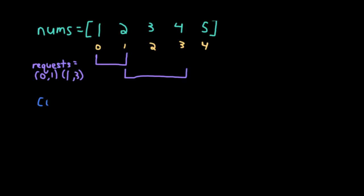Now, if we keep track of the count of how many times each index appears in our requests, index 0 appears once, index 1 appears twice, index 2 appears once, index 3 appears once, and index 4 doesn't appear at all. What that means is, if we left the nums array as is, the number 2 would be included in our result twice, the number 1 would be included in the result once, the number 3 would be included once, and the number 4 would also be included once. But that doesn't give us the maximum value.